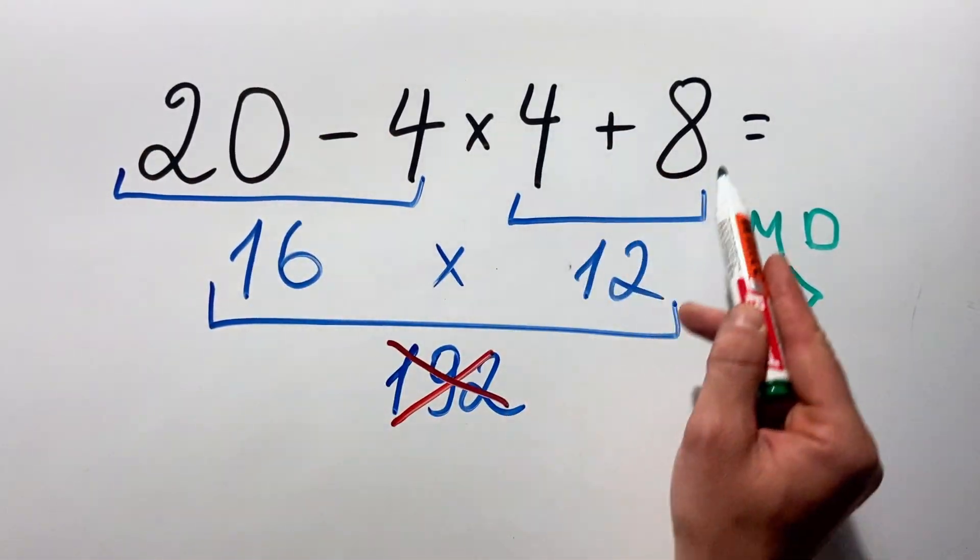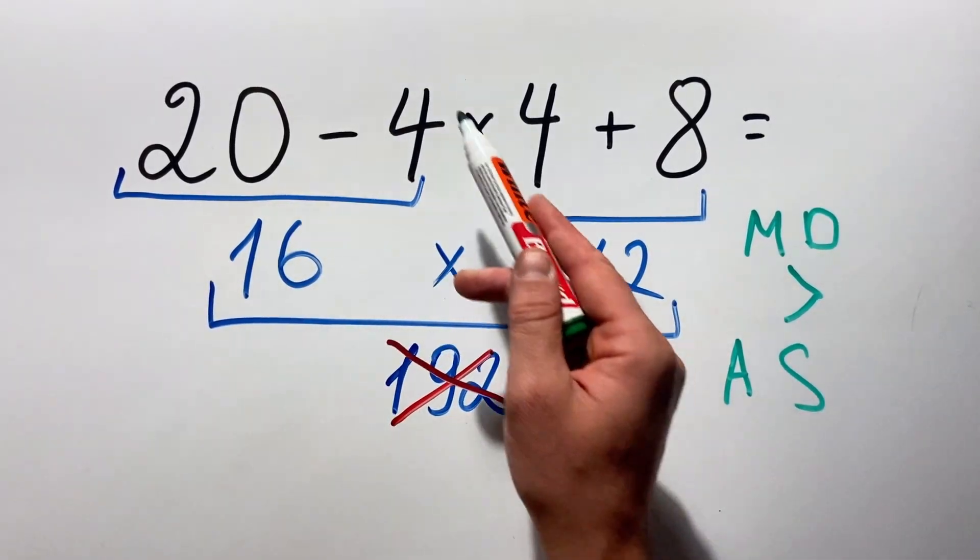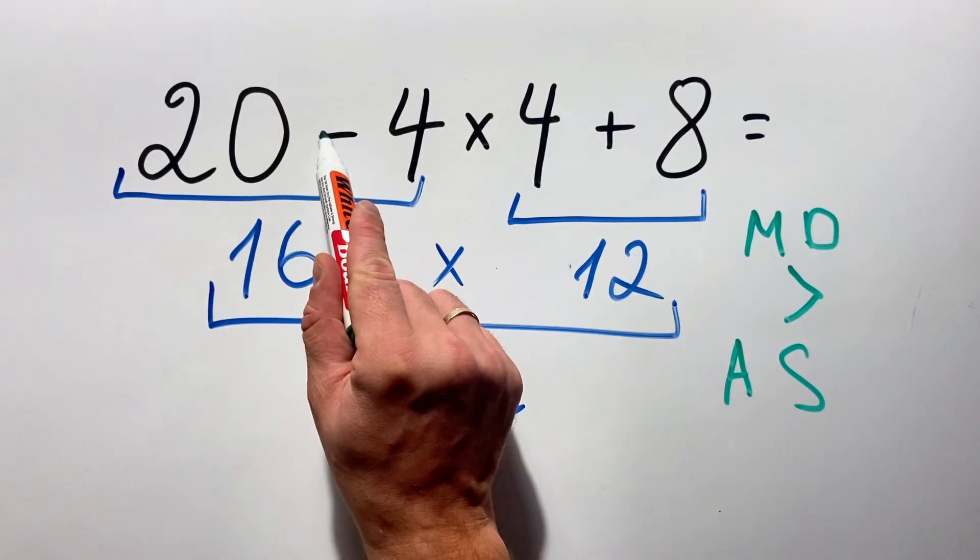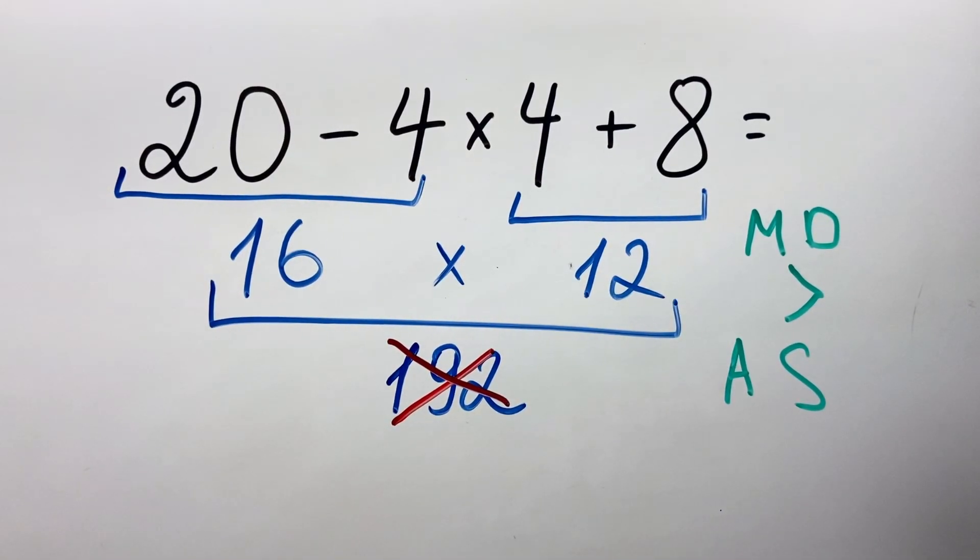You should not combine left and right just because it suits you and you think it's easier to calculate. First we do multiplication, then subtraction, and then addition.